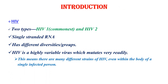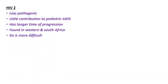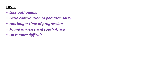HIV has two types: HIV-1 and HIV-2. HIV-1 is the most common type. HIV is a single-stranded RNA virus with different diversities and groups, and it is a highly variable virus which mutates very rapidly, meaning there are many different strains of HIV, even within the body of a single infected person. HIV-1 is the most common type and HIV-2 is the least common. HIV-2 is less pathogenic than HIV-1, contributes little to pediatric AIDS, has a longer time for disease progression, and is more difficult to diagnose. HIV-2 is found in western and southern Africa.